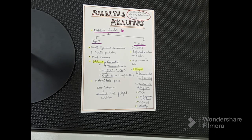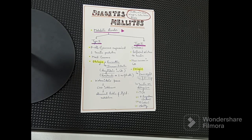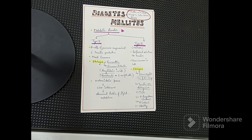Diabetes mellitus is a metabolic disorder. There are basically two different types of diabetes on the basis of insulin dependency. Number one is Type 1, which is insulin-dependent diabetes mellitus. In this type, beta cells of the pancreas are compromised — either damaged or not producing enough insulin — leading to insulin deficiency.